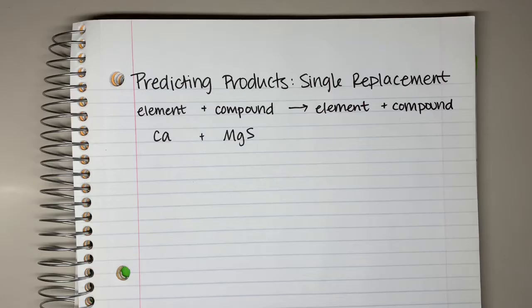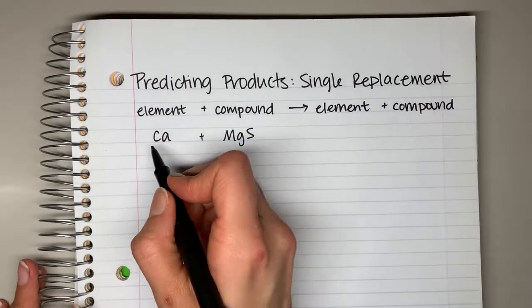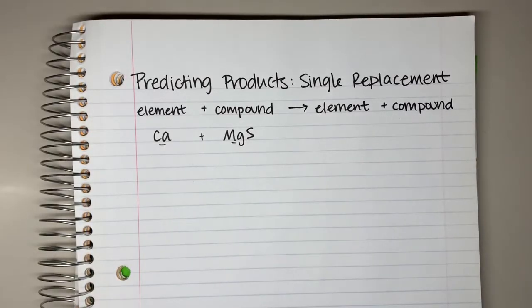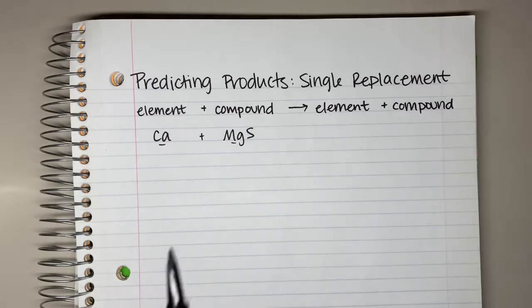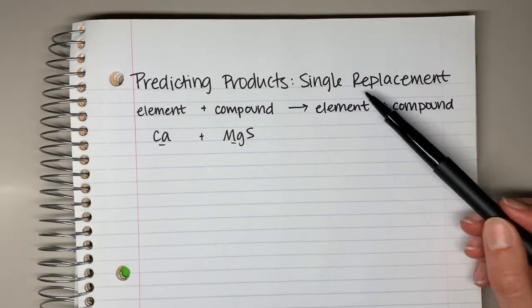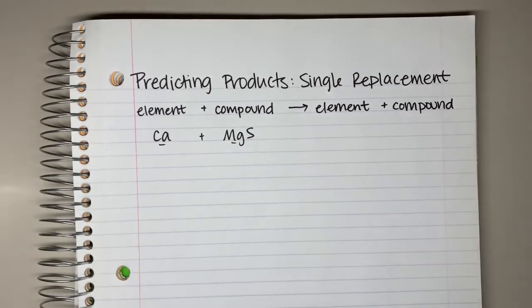There are two different categories of single replacement reactions. In this one, we have two metals: calcium and magnesium. When you have two metals, they are going to want to switch places with each other. So the calcium wants to switch places with that magnesium so that it can bond with the sulfur to make the new compound, leaving magnesium as the lone element.